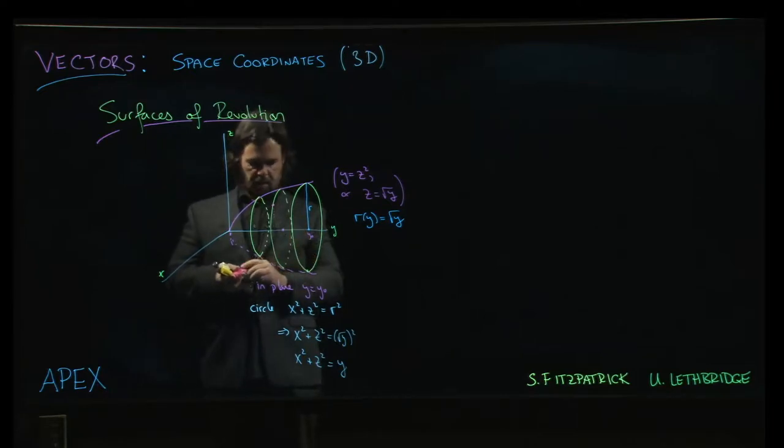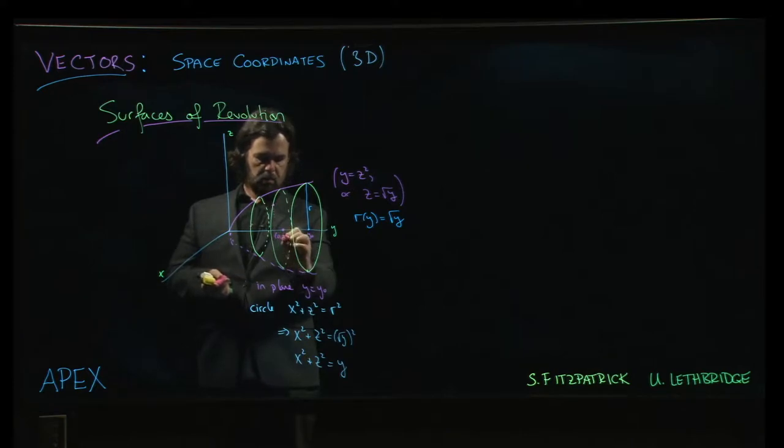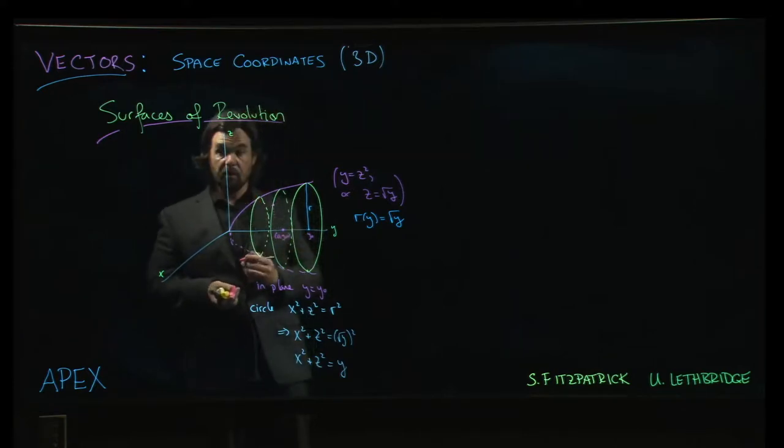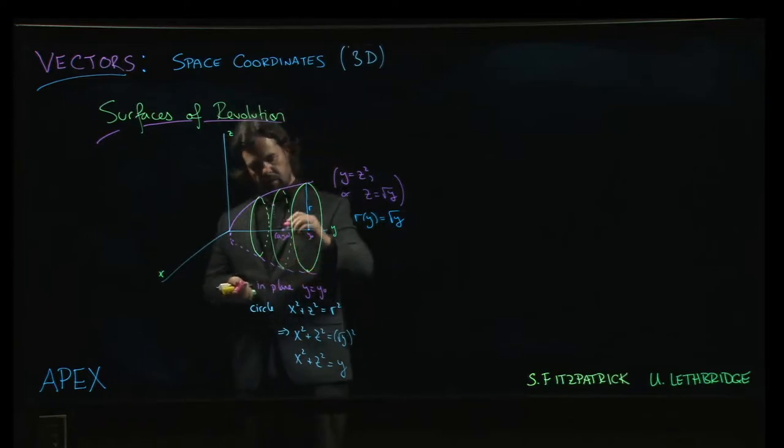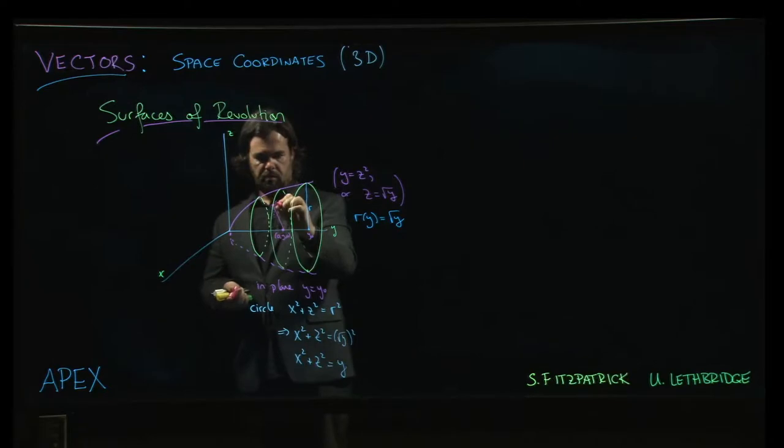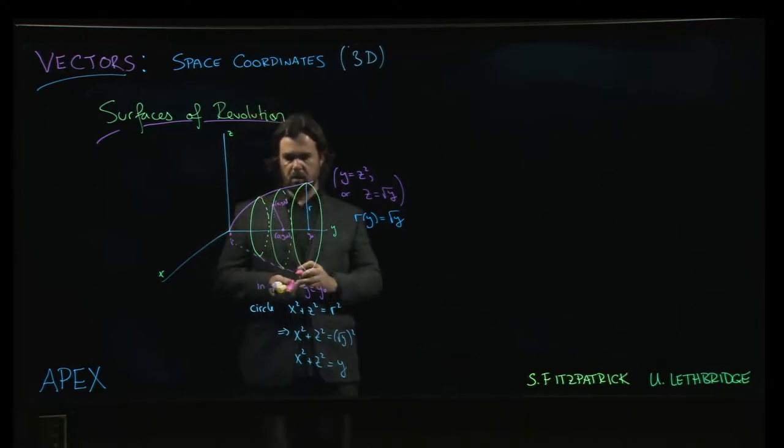And then out here, we would have some general point x, y, z on that circle, right? And the radius of the circle has to be the same everywhere around the circle.